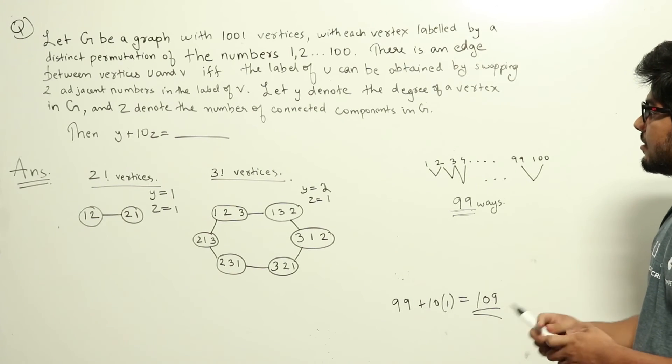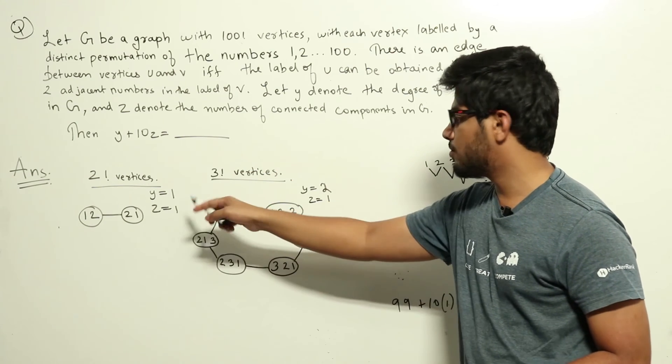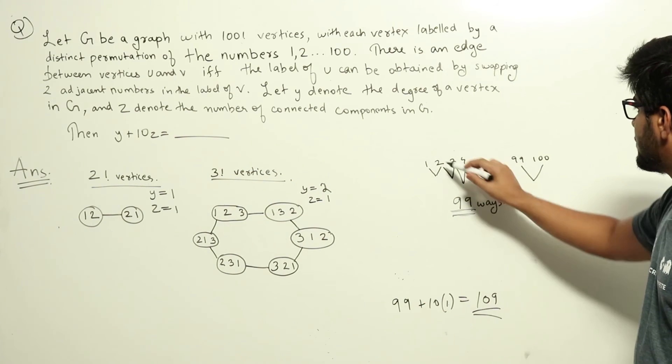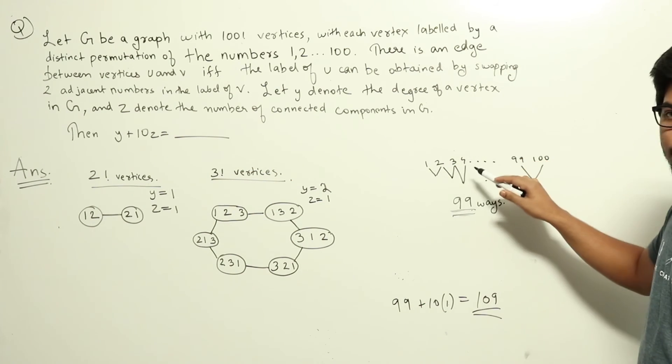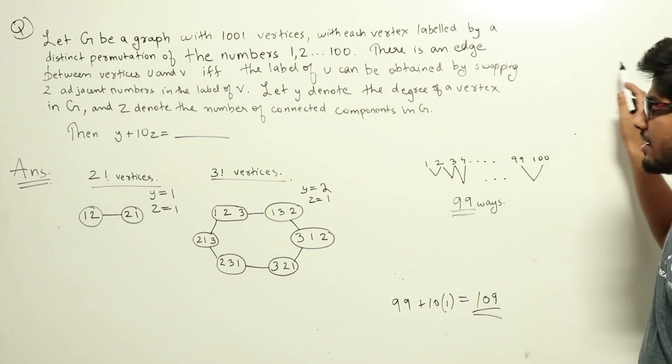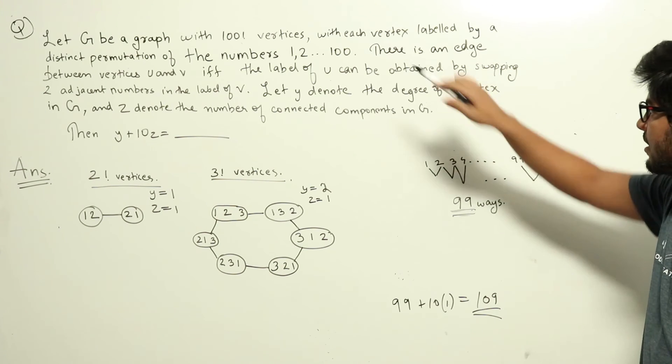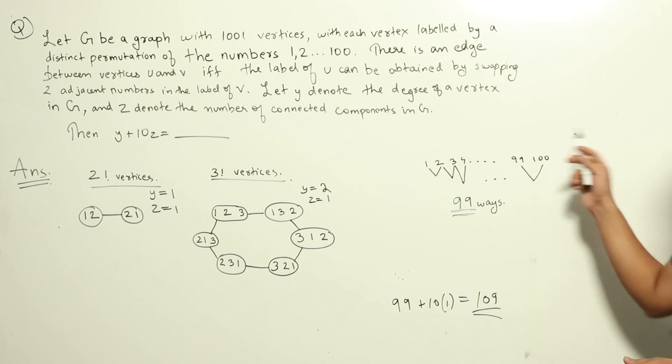Now again these two graphs if you look this forms one full connected component. Similarly for here also whatever swapping I do I can always reach one other permutation in 100 factorial permutations using any number of swaps. So finally the full graph will be one single connected component.